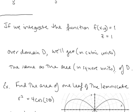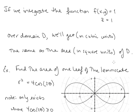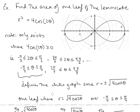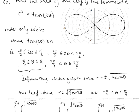Notice that if we integrate the function f(x, y) equals 1 over a domain D, the value we get represents a volume, but since the height is 1, the value is the same as the area of the domain — volume in cubic units equals area in square units numerically. So if we want to find the area of one leaf of the lemniscate r squared equals 4 cosine 2 theta, we can find the volume under the surface z equals 1 over that leaf.